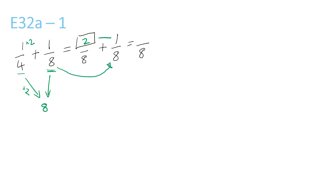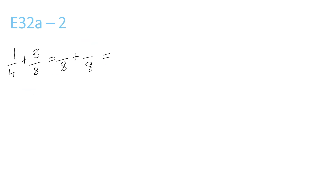Now you do 2 plus 1 is 3, and the 8 stays the same. 4 and 8 both go into 8 again. 4 times 2 is 8, so you have to times the top by 2 — 1 times 2 is 2. Now 8 is already over 8, so 3 over 8, you just bring it over here and keep it the same. Now you have 2 plus 3 is 5 over 8.